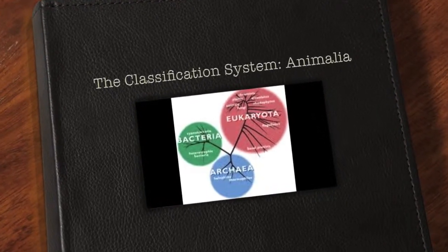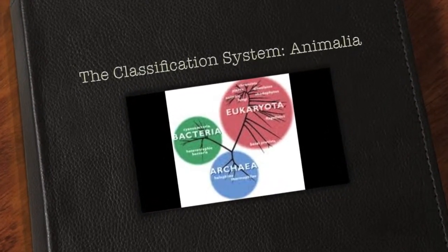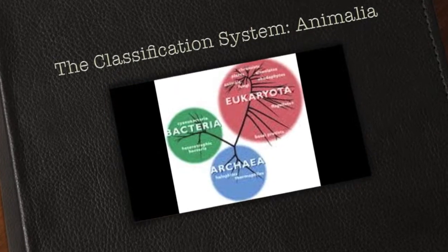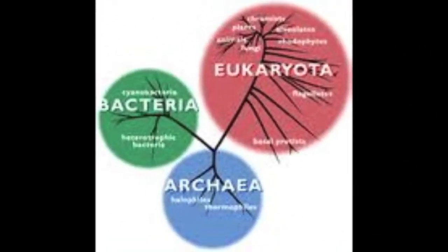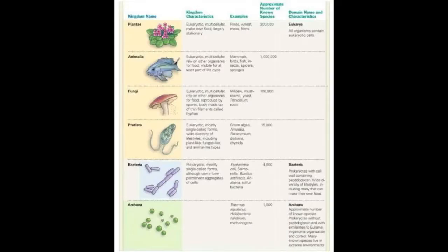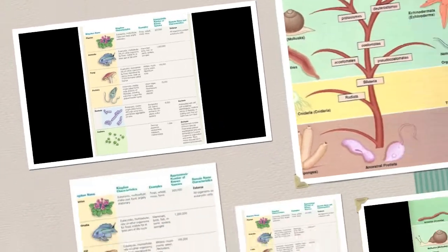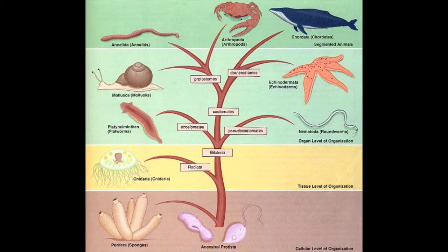Scientists use a classification system to organize and categorize the billions of species that have lived on Earth. The phylogenetic tree of life contains three domains: bacteria, archaea, and eukaryota. Each domain contains kingdoms: archaebacteria, eubacteria, fungi, plantae, animalia, and protista. Today, we will be discussing the characteristics of the nine major phyla in Kingdom Animalia. Each phylum contains different characteristics.